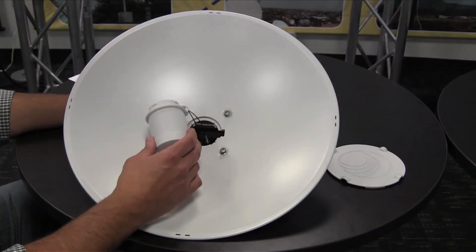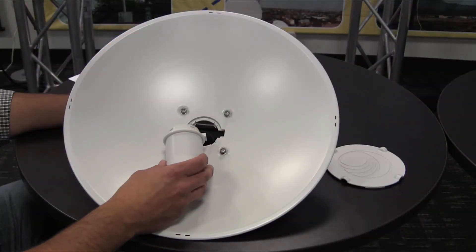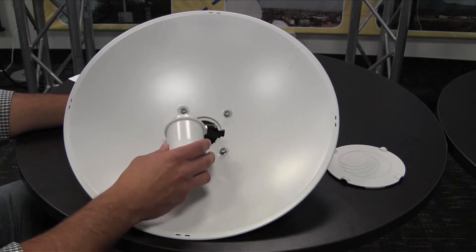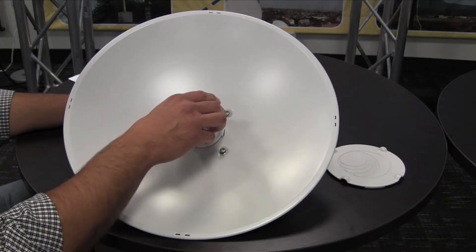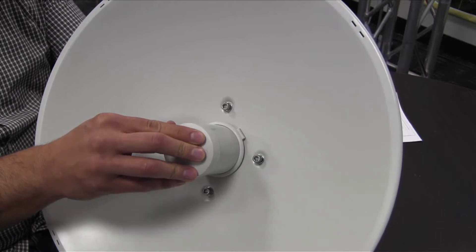Insert the RF cables of the feed and line up the feed's notch with the assembly, being careful not to crimp the RF cables. Press down on the feed until you hear a click.